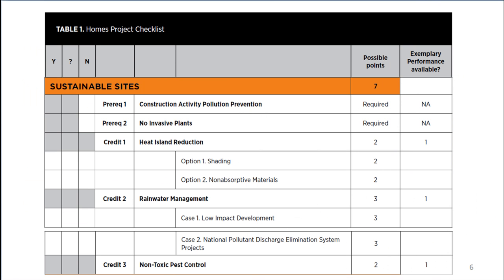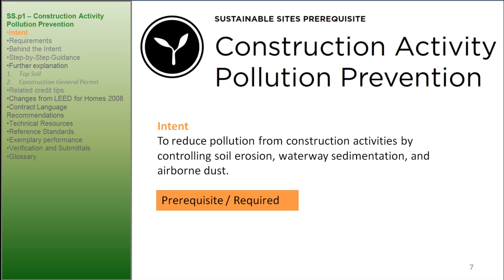Construction Activity Pollution Prevention is the first prerequisite of Sustainable Sites — it is required. Intent: To reduce pollution from construction activities by controlling soil erosion, waterway sedimentation, and airborne dust.